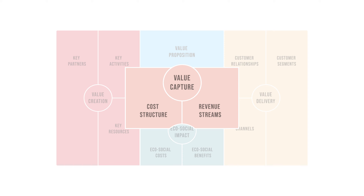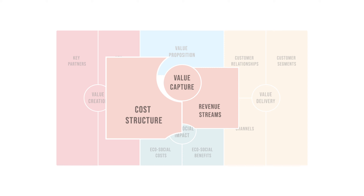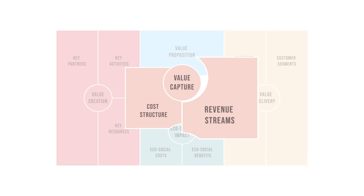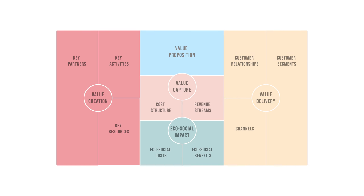In exchange for the delivery of value for customers, value for the company is captured in the fourth section. Costs to all stakeholders in the system are described under cost structure — these are the costs to support key activities, obtain resources, and deliver your value proposition. They can be fixed costs like salary or rent, or variable costs. Under revenue streams, all the ways revenue is generated are captured. You can map how much your customer is willing to pay and in what way. Up to here, the sustainable business model canvas is similar to a regular business model canvas, and it's good to think about sustainability in these first four sections already.